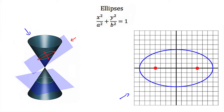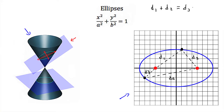For example, if I choose a point on the ellipse and measure the distance to one focus, calling that d1, and then measure to the other focus, calling that d2, then d1 plus d2 is the same for every point on the ellipse. If I choose a different point and measure distances d3 and d4 to the two foci, then d1 plus d2 equals d3 plus d4. Every point on the ellipse has the same total distance to both foci.